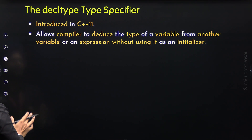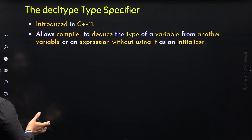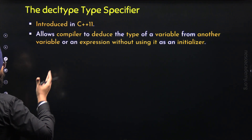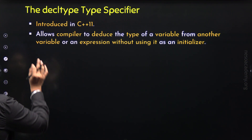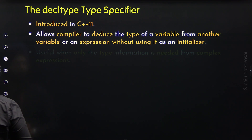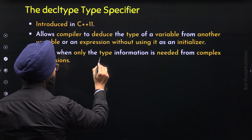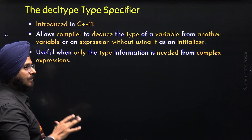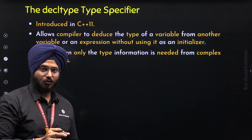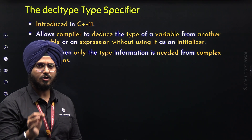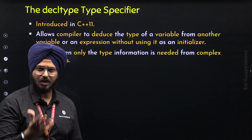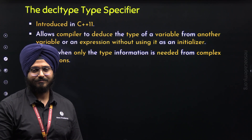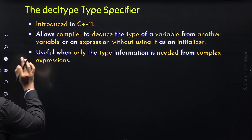In the case of decltype, the name refers to declaration type — the type deduction is based on a variable or an expression passed directly in the declaration, not as an initializer. So with decltype, we do not have to provide the initializer. If we want, we can, but the initializer does not play any role in type deduction. It is also useful when only the type information is needed from complex expressions, without evaluating them.